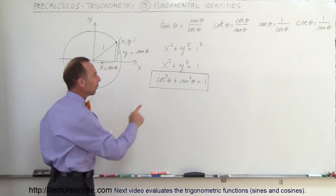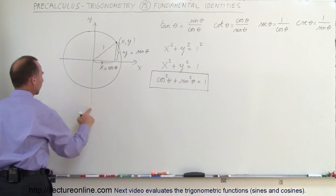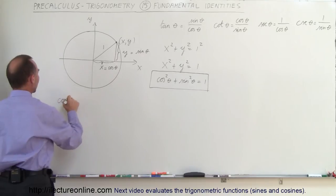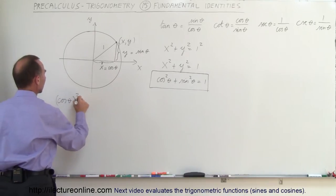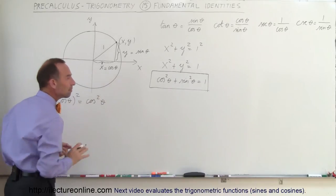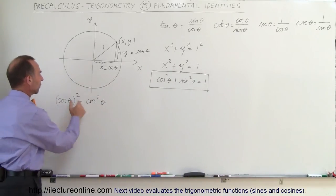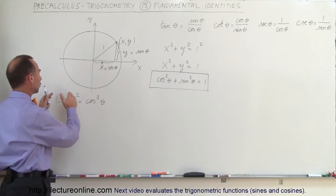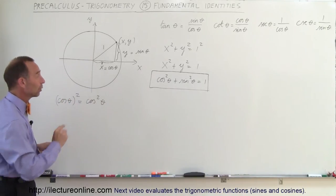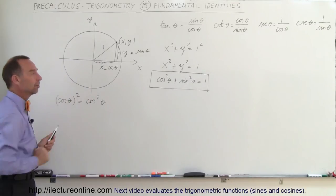Now, why did I write cosine squared theta? It turns out that the cosine of theta quantity squared can simply be written as cosine squared theta — that is the same thing. It's just another way of writing it without using parentheses. So cosine squared theta means the cosine of theta, quantity squared.